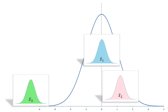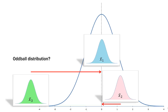Now look at this example. X bar sub one is still roughly at the middle, and X bar sub two is a bit to the right. But now look where X bar sub three is — it's way over to the left. So we might conclude that this third mean, in the green, is too far away from the others. It's too far away from the mean of the larger group to be considered part of that larger population — it's kind of the oddball. X bar sub two is about a moderate distance away, but X bar sub three is way to the left — the weird one that doesn't belong in the same population as the other two.